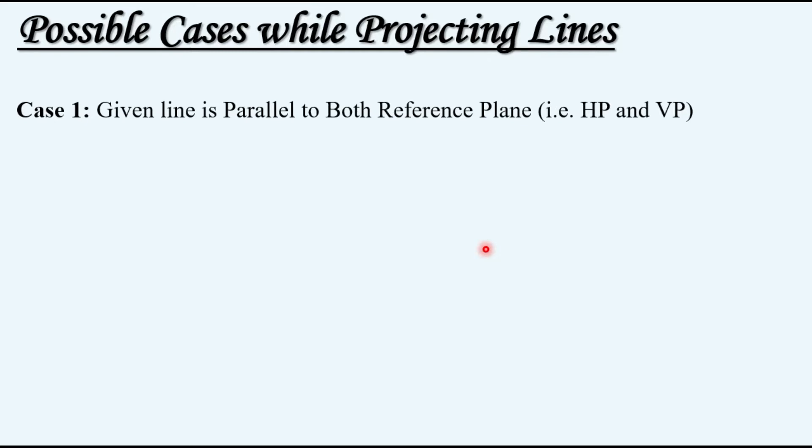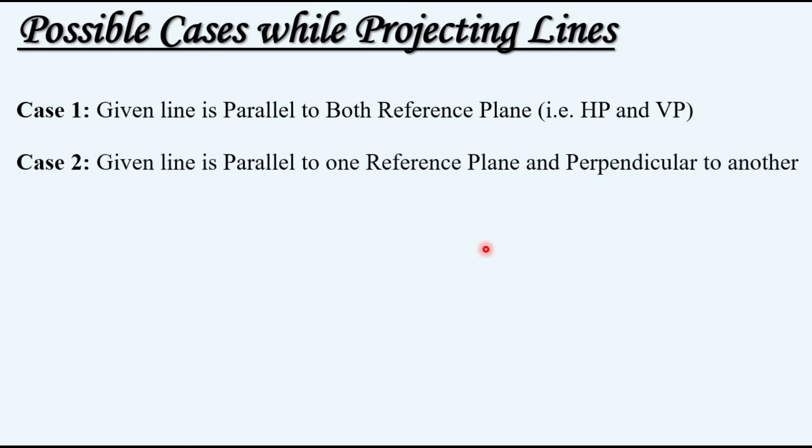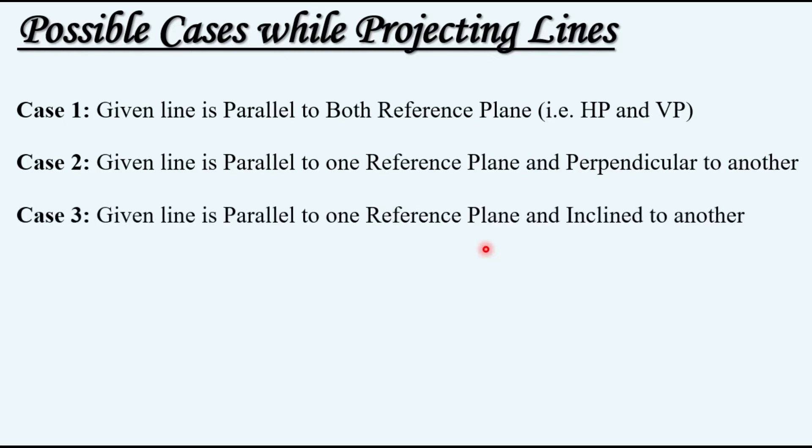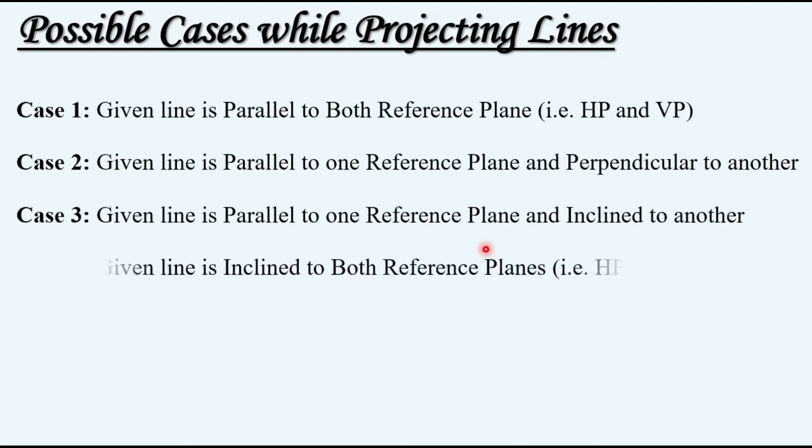There are four possible cases while projecting lines. Case one: the given line is parallel to both reference planes, HP and VP. Case two: parallel to one reference plane and perpendicular to another. Case three: parallel to one reference plane and inclined to another. Case four: inclined to both reference planes, HP and VP.